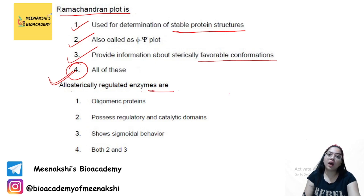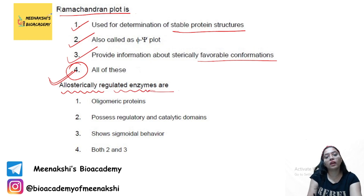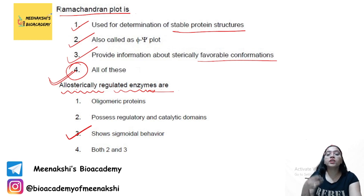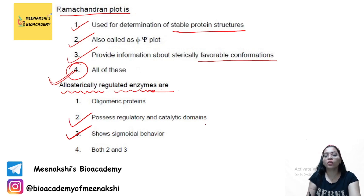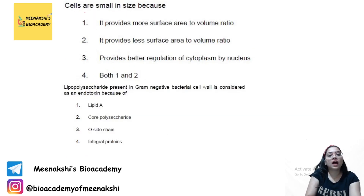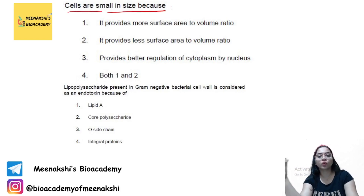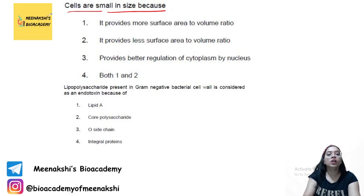Allosterically regulated enzymes possess both a regulatory domain and a catalytic domain. So the answer is options 2 and 3 both. Next, cells are small in size because if the size is small, the surface-to-volume ratio increases, providing more surface area relative to volume.